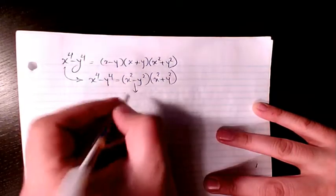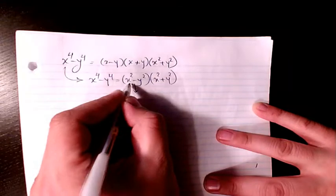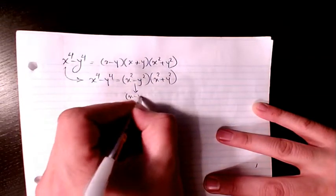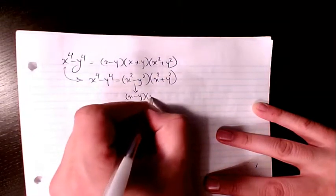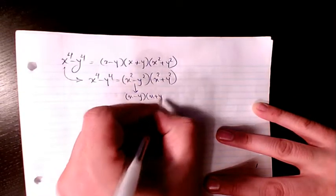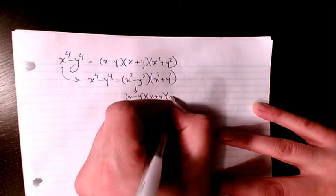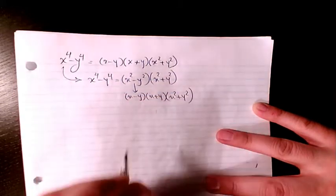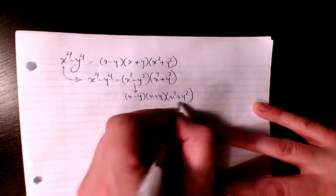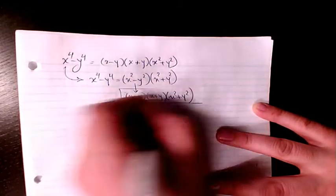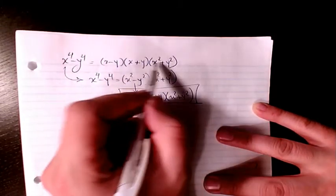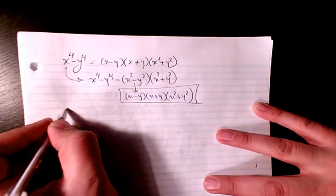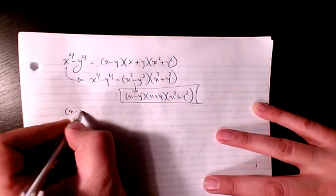Then we have the difference of squares again, so x squared minus y squared can be written as x minus y times x plus y. Multiplied by x squared plus y squared, that will be the answer.